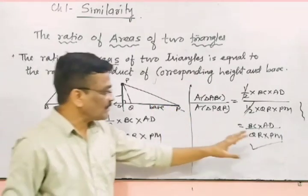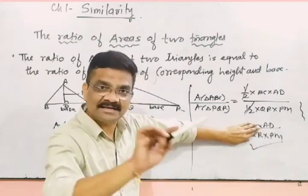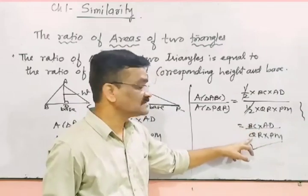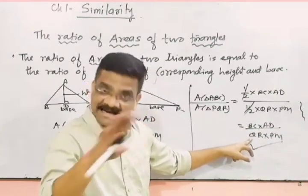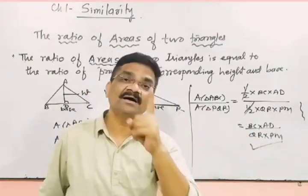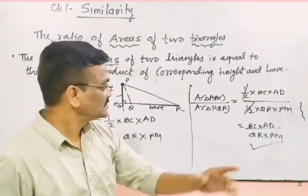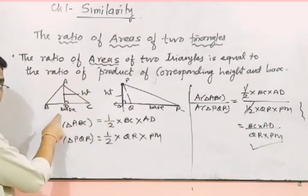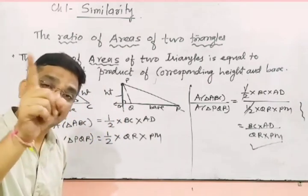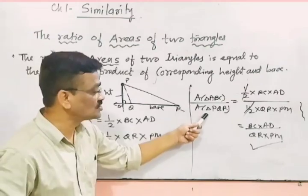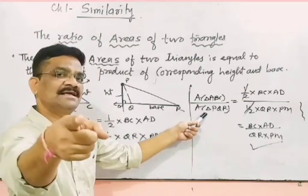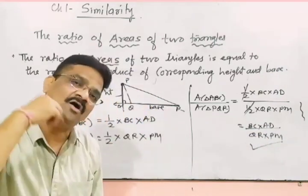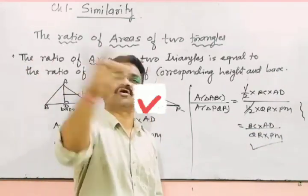So if base is same, then base will cancel. If height is same, then height cancels, which ratio will be? Base ratio. So this is the first topic. What is the topic? If there are two triangles and the area ratio is the same, then base into height upon base into height. Take this and solve the problem. Understand?